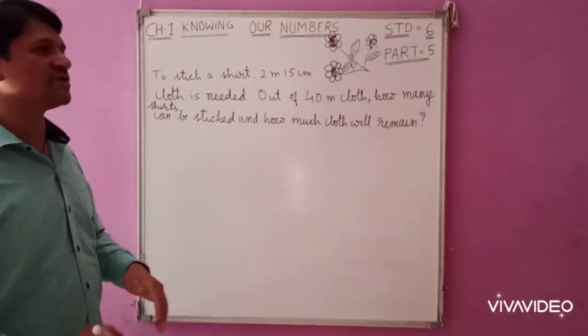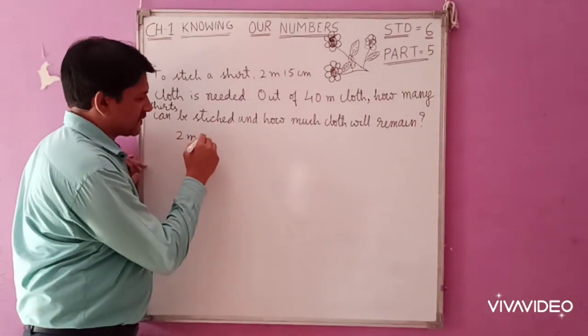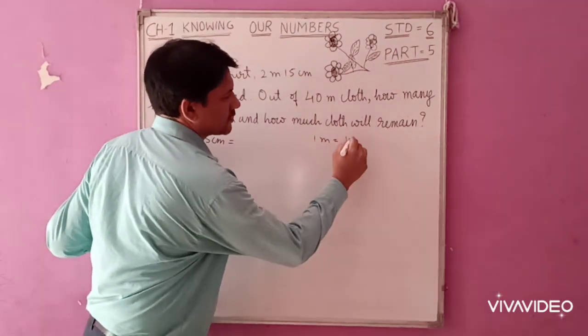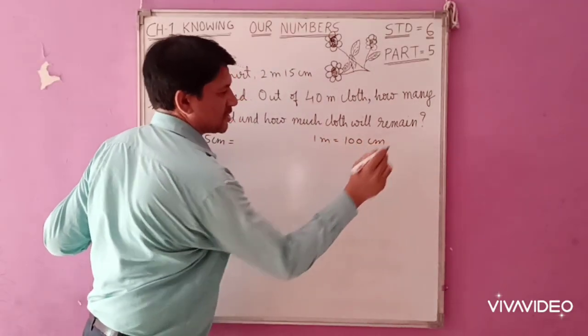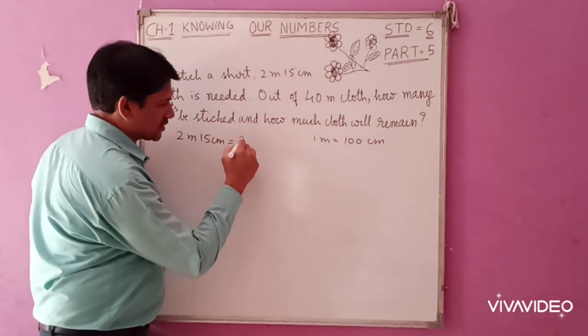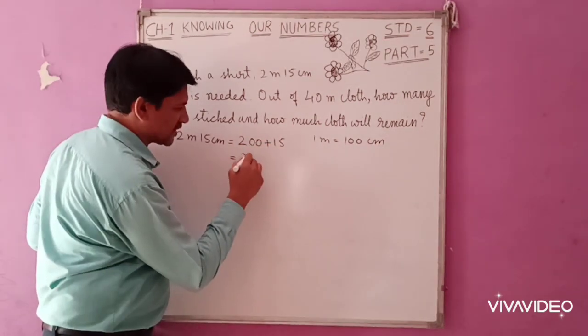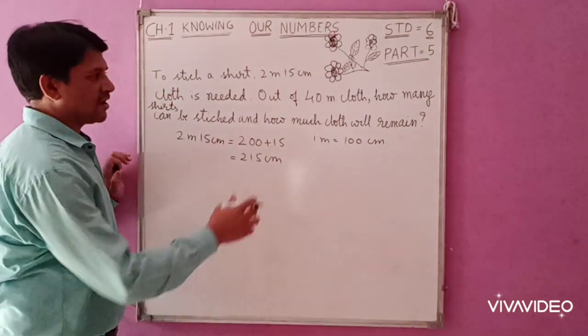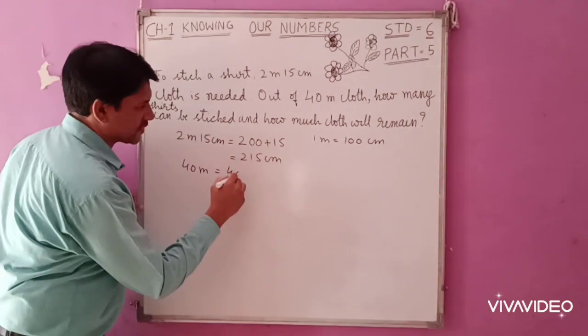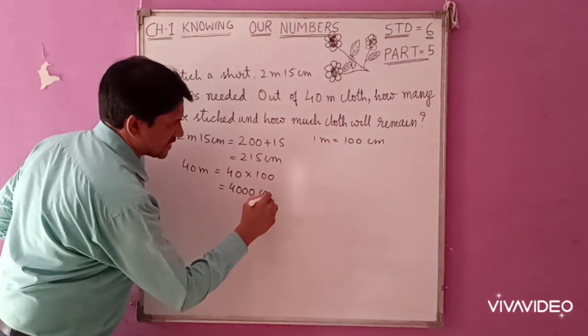The problem is of division. First, we convert 2 meter 15 centimeter. You know 1 meter is equal to 100 centimeter. So 2 meter 15 centimeter is 200 plus 15, that is 215 centimeter. Now convert 40 meter into centimeter, that is 40 multiplied by 100, which equals 4000 centimeter.